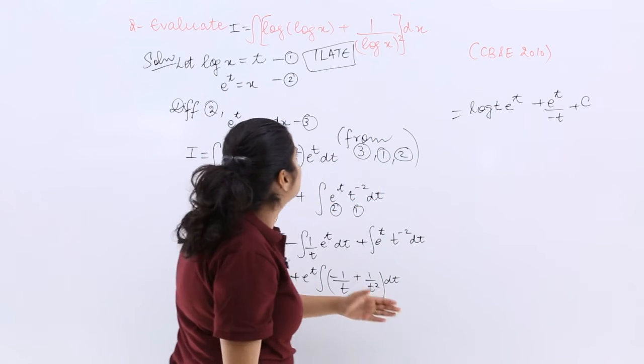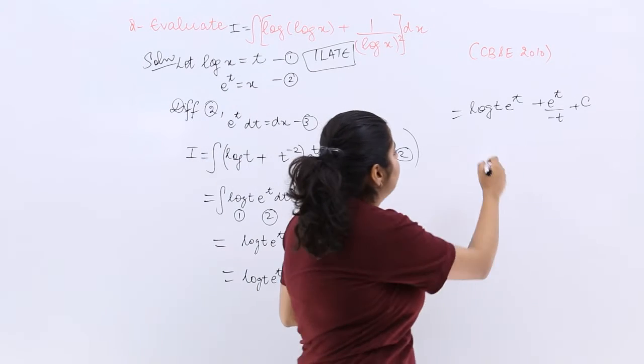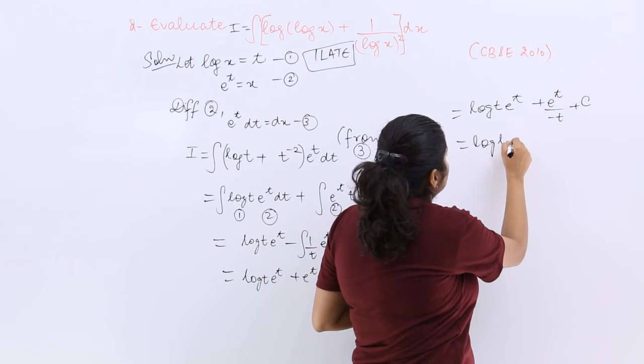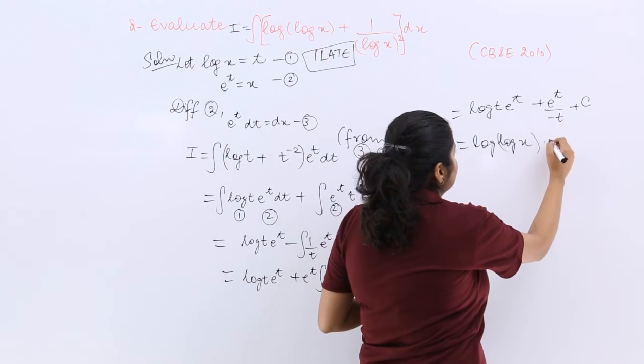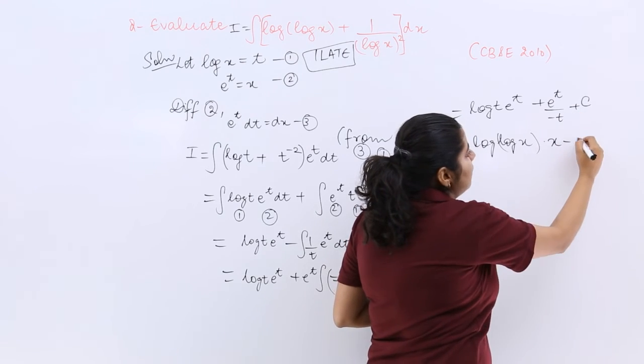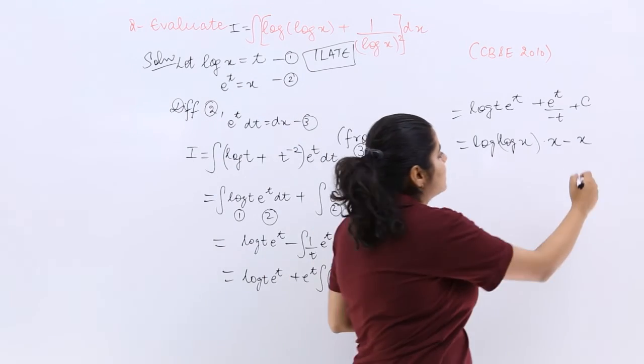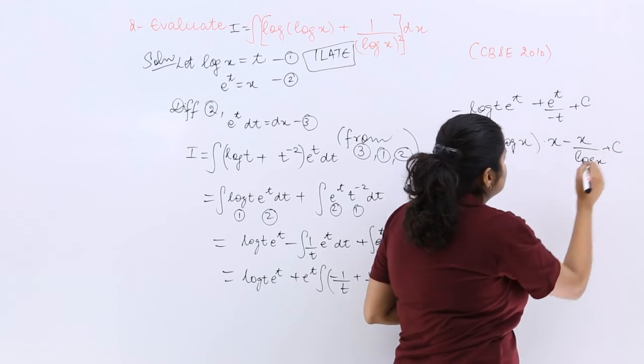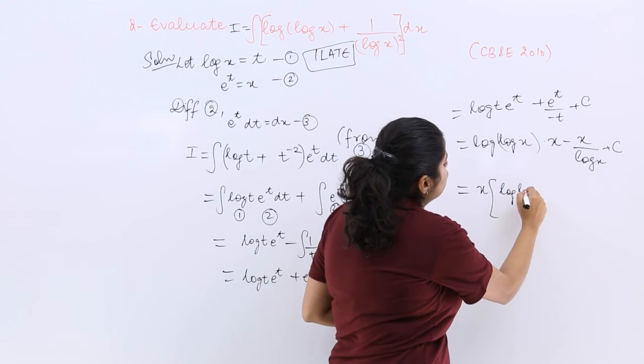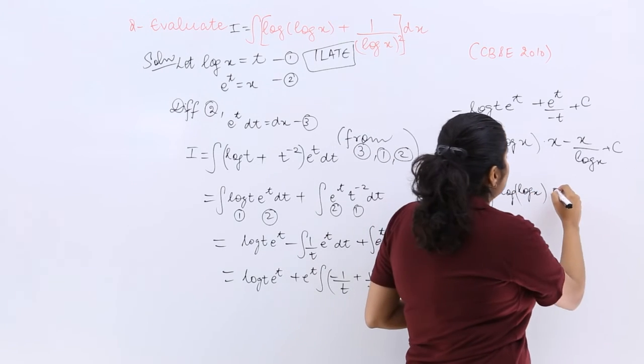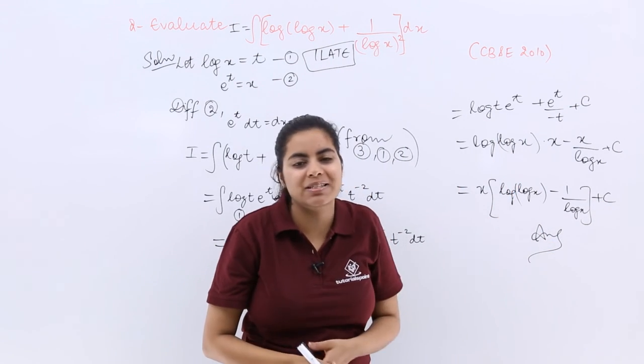Now let me just substitute the values. Log t was what? If I know that my t is log x so it is log(log x) then e raised to the power t is nothing but your x minus e raised to the power t is x upon t which is log x plus c. Or in short let me just write the answer making clear certain things. So it should be x times log(log x) minus x upon log x plus c and that is the answer to this question.